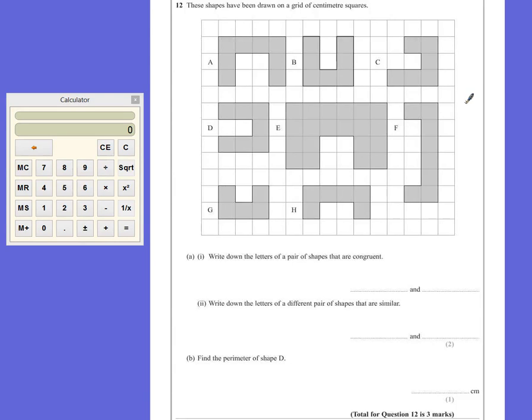Question 12. These shapes have been drawn on a grid of centimeter squares. Part A, section 1. Write down the letters of a pair of shapes that are congruent.